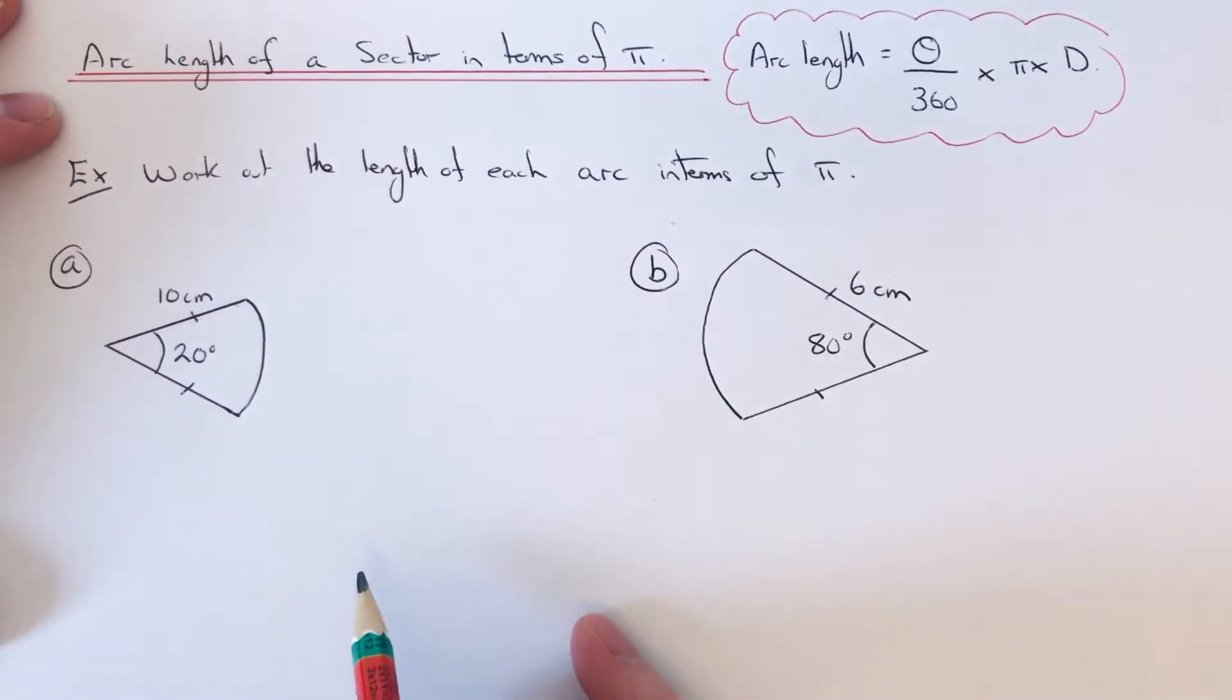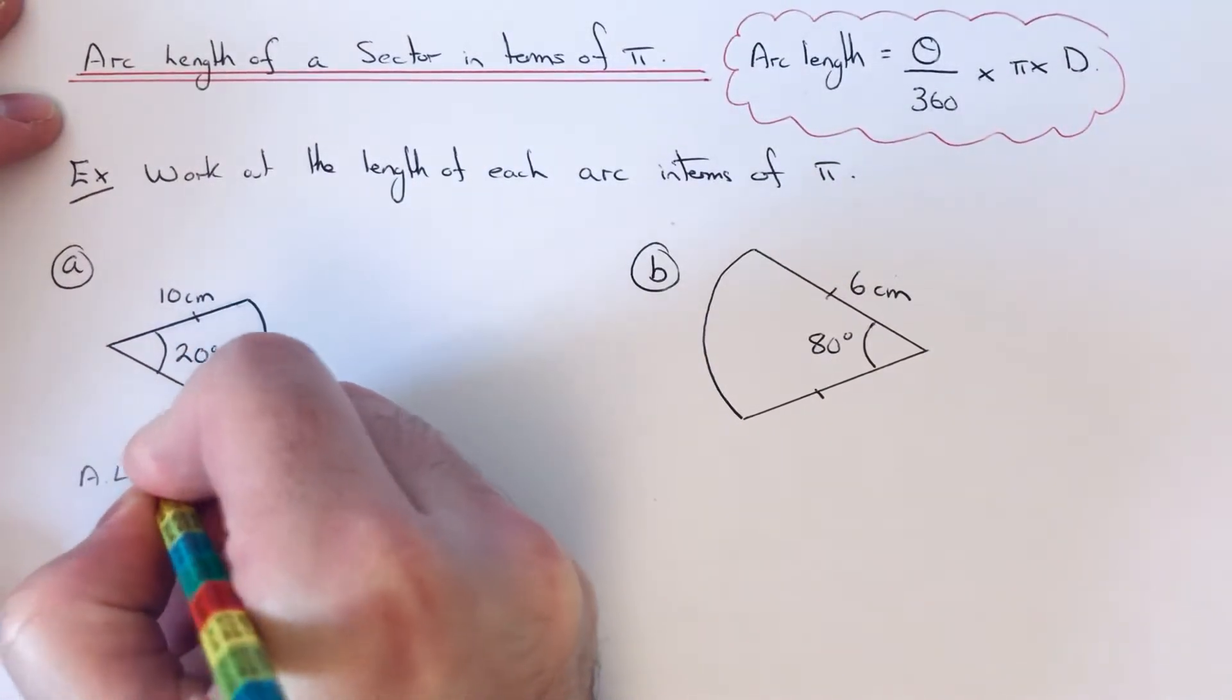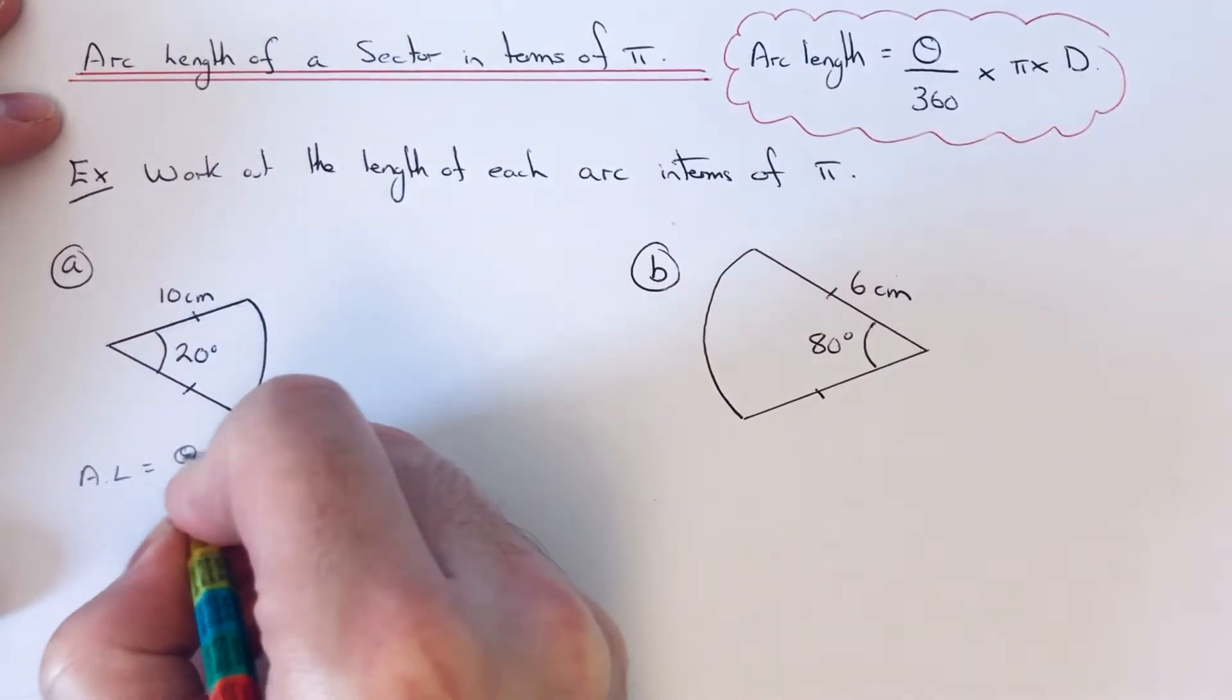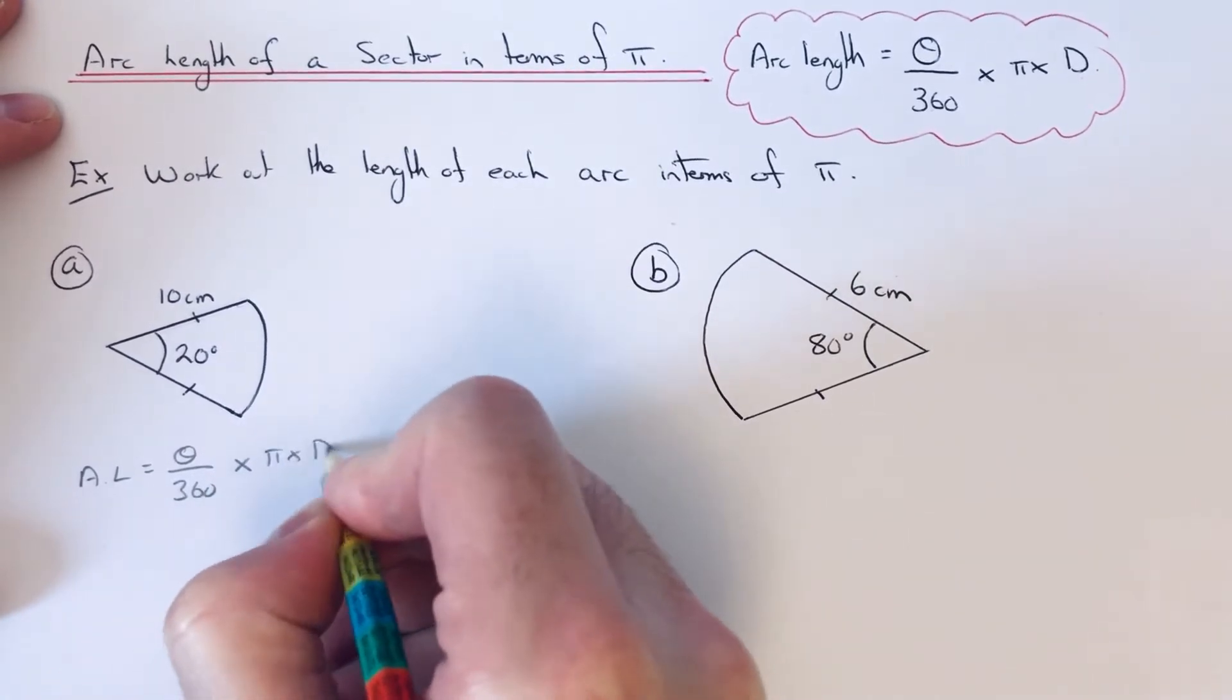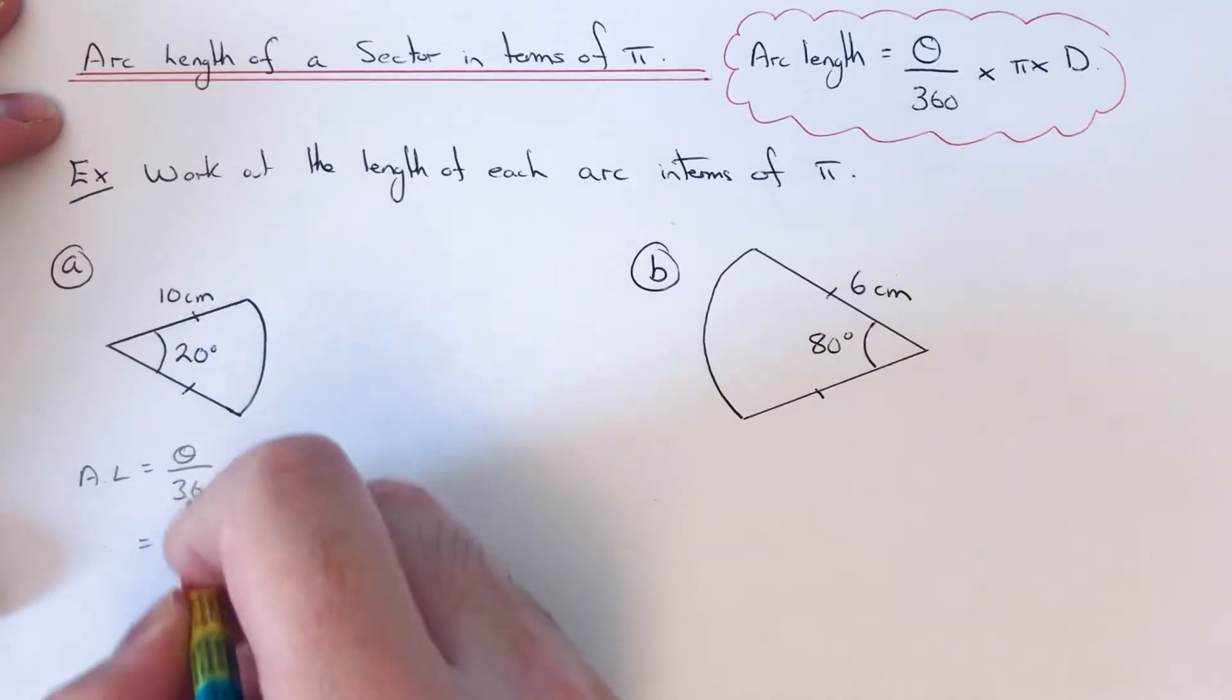Let's have a look at the example here. Let's write down our formula for the arc length: θ/360 × π × d. The angle here is 20.